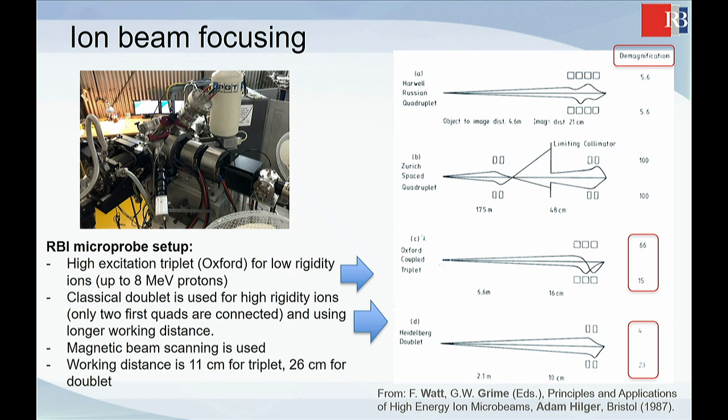You just consider that at the end, basically, you have something like one micron focused beam. What we are looking in the picture, it's a triplet made by three lenses which are not equal. This is probably one of the unique examples because two quadrupoles are from Oxford company, and the final one is from Melbourne.